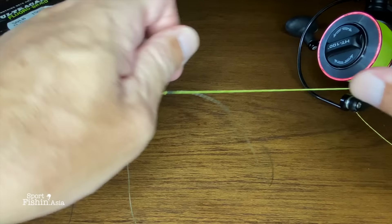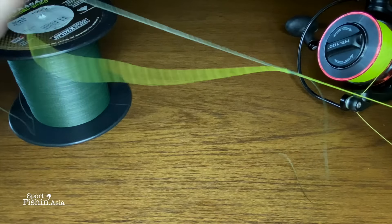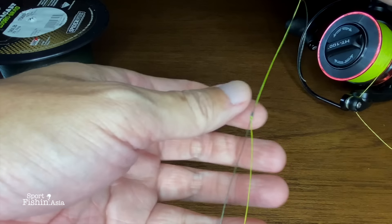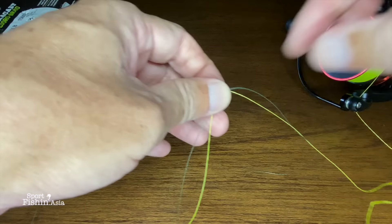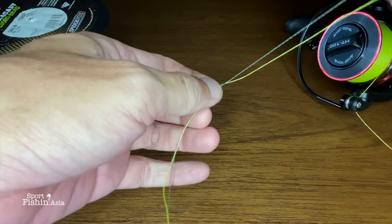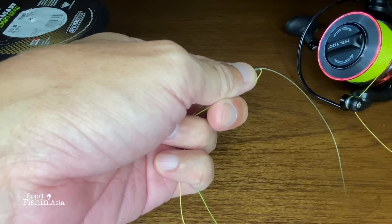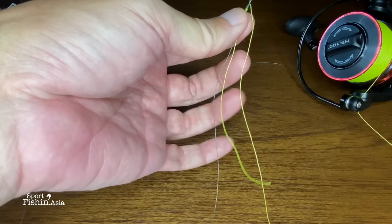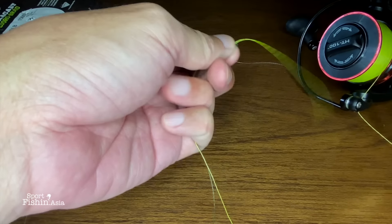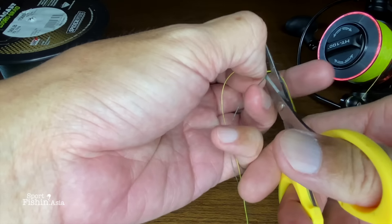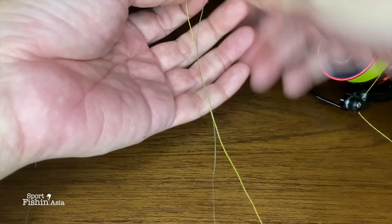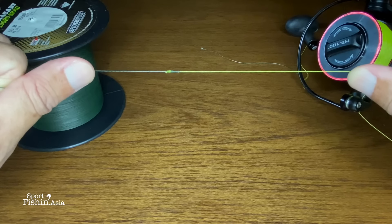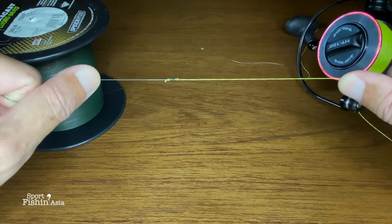And the other side. Pull them tight again. And now you can cut the tag ends off. So this is how the knot looks like.